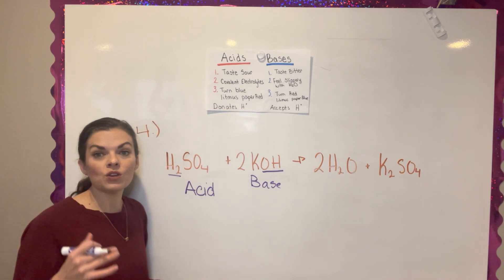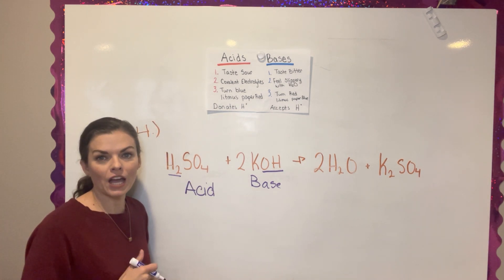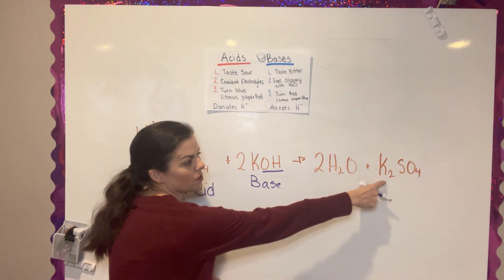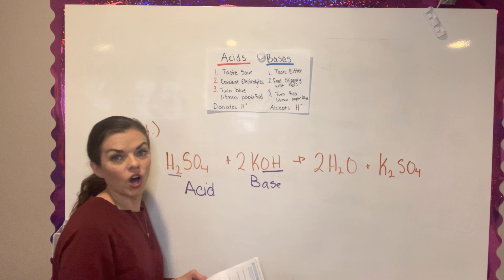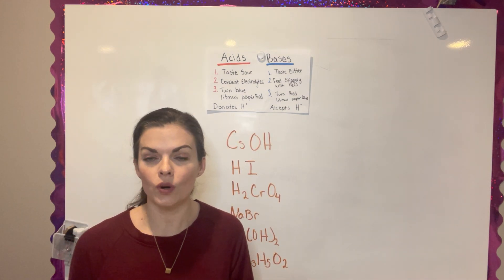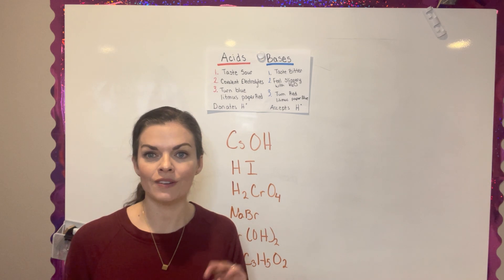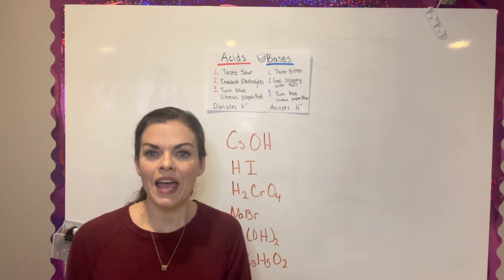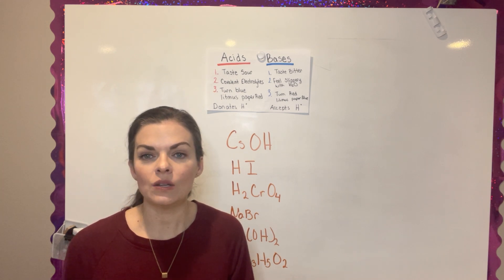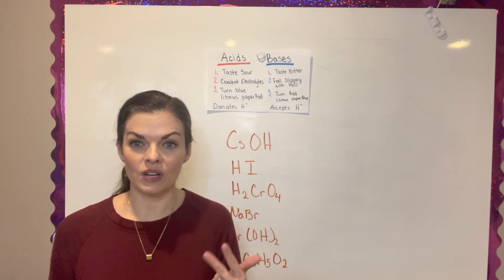For this compound, anytime I see the OH, it is a big clue to me that this is a base because what's going to happen is that OH is going to accept the hydrogen from here to make water. The most common acid-base reaction that we're going to see is an acid plus a base equals a salt that we're going to learn about and water. Question number five is similar to question three and four. It's asking you to tell if a compound is an acid or a base. However, it is not doing it in a reaction. The only thing it wants you to do is say acid, base, or neither.